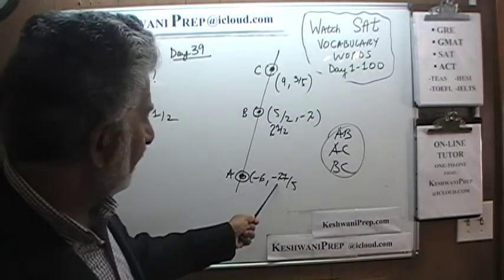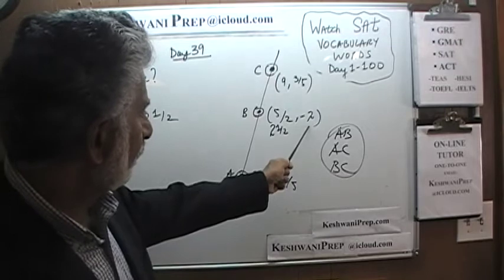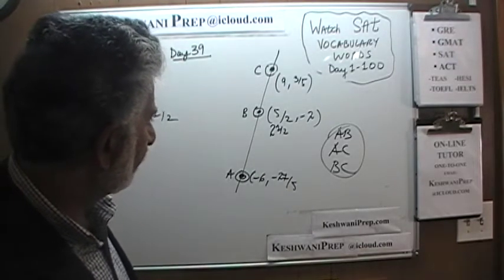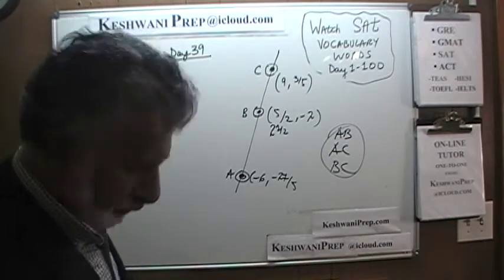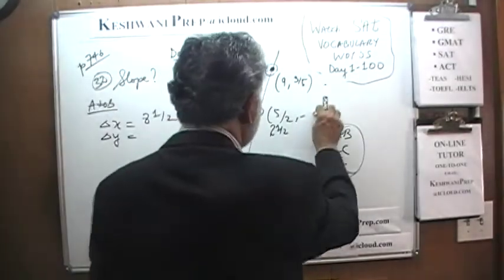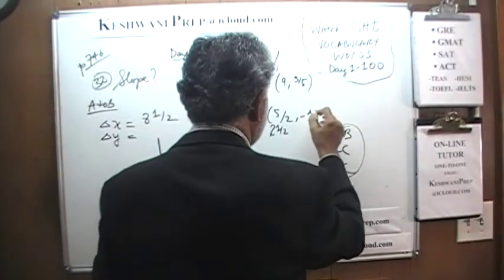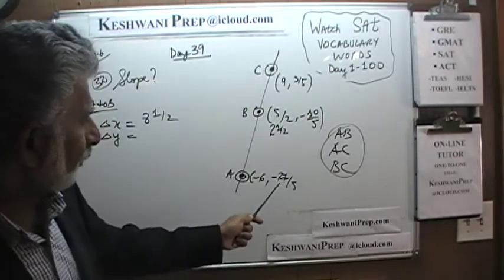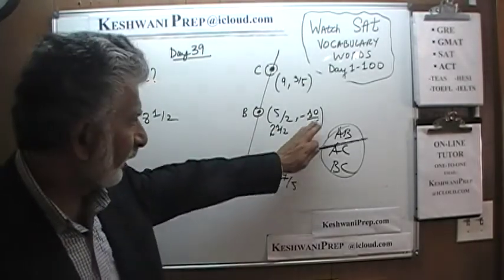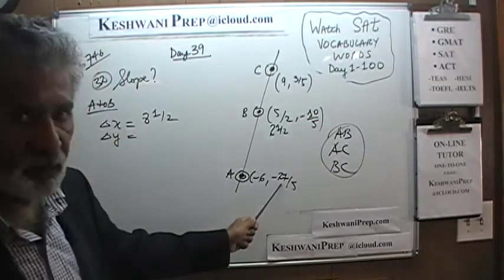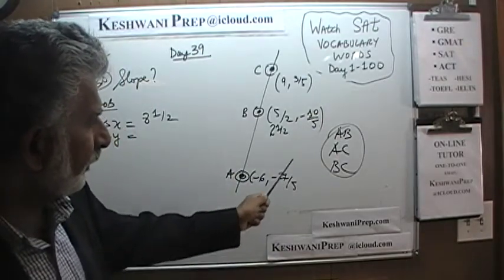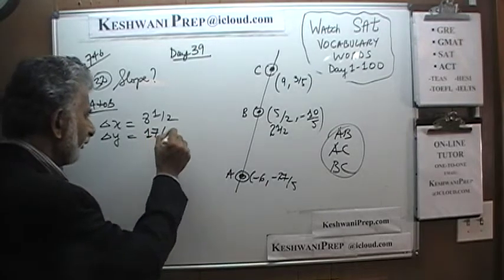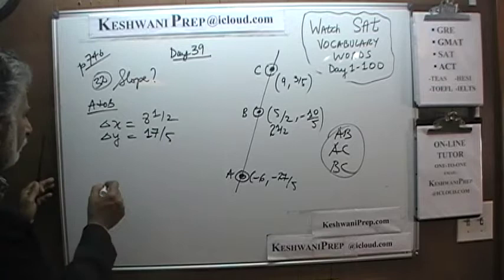We are going from negative 27 fifths to negative 2. Why don't we think of negative 2 as 10 fifths? This makes it easier, so they are all in fifths. Now, forget the fifth part for the time being. If we go from negative 27 to negative 10, that's a journey of 17 — 17 fifths — that's how many fifths we have to travel.